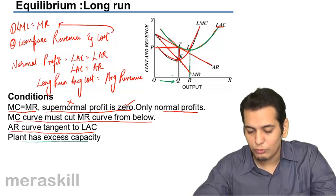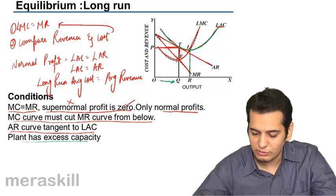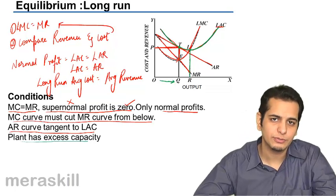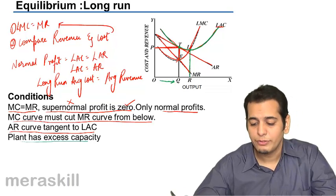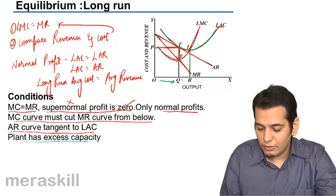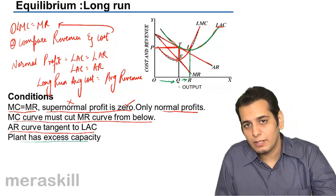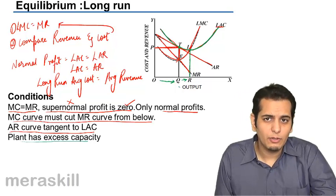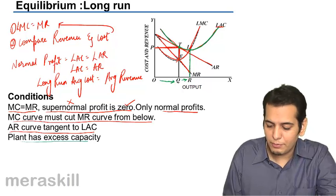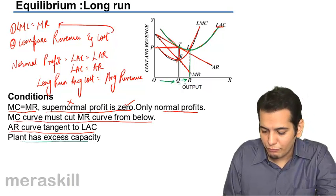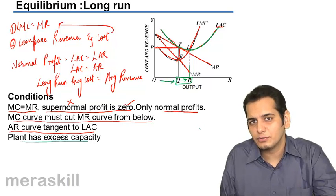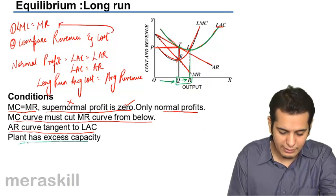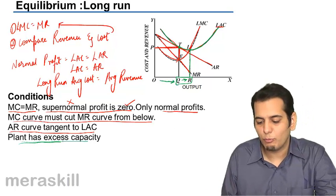That means if you produce OR number of units your cost will be minimum. You are producing OQ number of units because that is the equilibrium point, and that is the equilibrium number of units. So you can conclude that you have further more capacity in your plant. Your plant can produce more number of units which will give it economies of scale. But you are not producing QR number of units. This much you are not producing. That means there is some idle capacity in the plant. So the plant has excess capacity than what you are using.